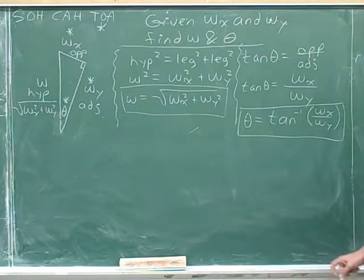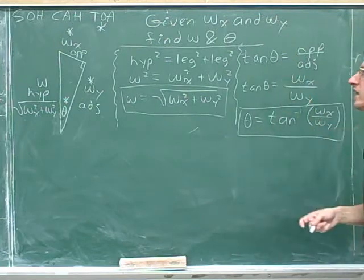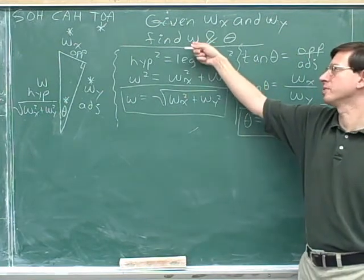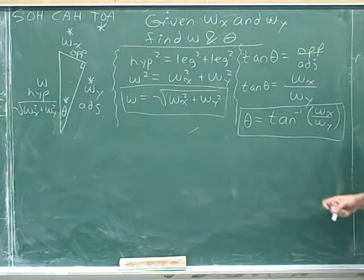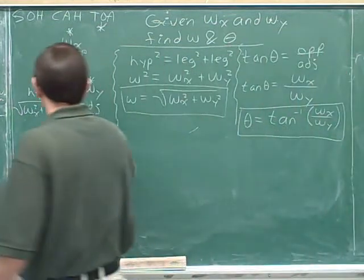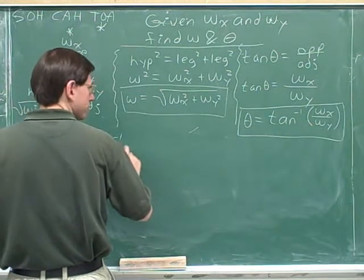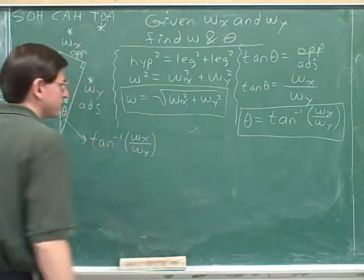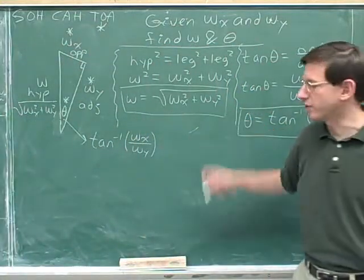Remember that for this type of problem, the answer has to be in terms of just the givens, wx and w sub y. It would not be legal to find an expression for theta that uses w, because w is an unknown. But fortunately, there are no w's over here. So this is a perfectly legal way to solve the problem. So this is a good answer. So we can build that information into our sketch. That angle is the inverse tangent of w sub x divided by w sub y. And now we've answered the problem. These are our two answers.